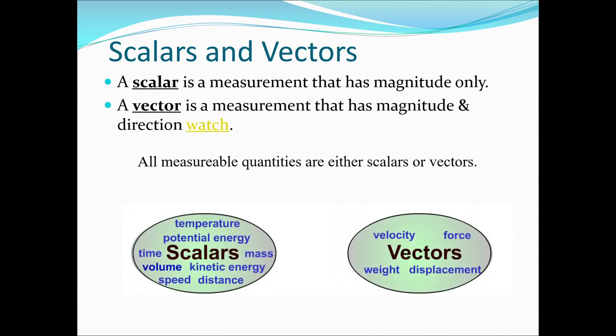So let's look at some examples. On the left we've got scalars: temperature, energy, kinetic energy, speed, distance, volume. On the right we've got vectors: velocity is the vector equivalent of speed, and displacement is the vector equivalent of distance. We give them different names so that it's clear whether we're discussing a vector or a scalar. From this point on, velocity and speed are different physical quantities.